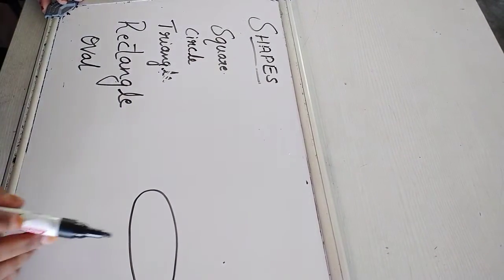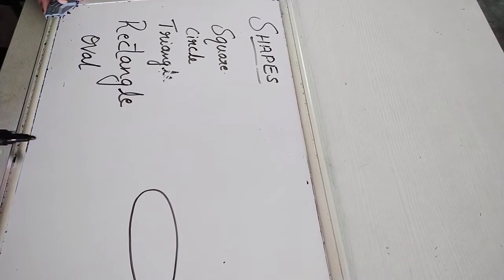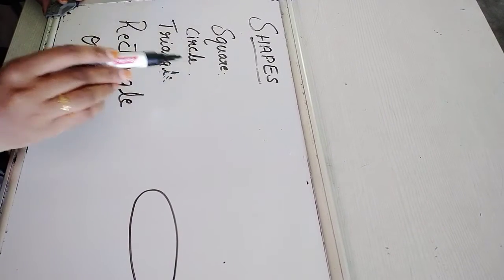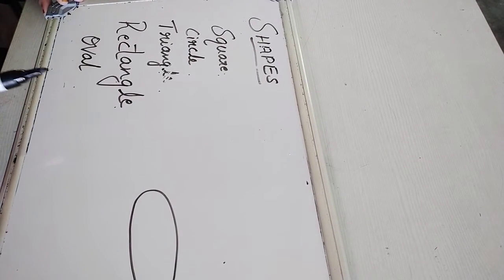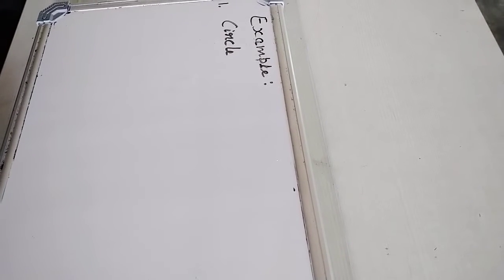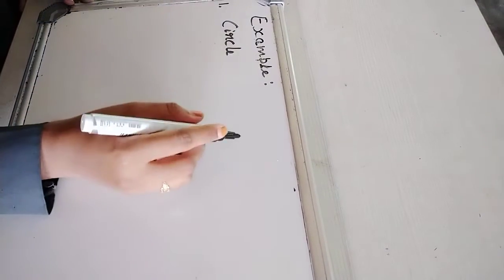Shape of an egg is like an oval shape. Square, circle, triangle, rectangle, oval. Is it clear students? Now I am going to show you some examples of shapes. Let's learn how to draw the shapes. Now first, let us draw circle. Students, draw along with me.